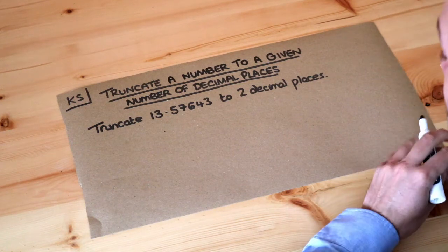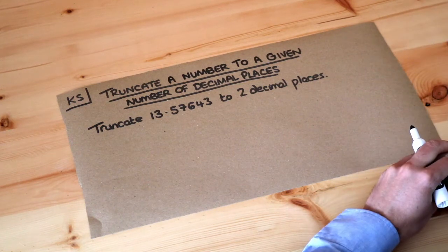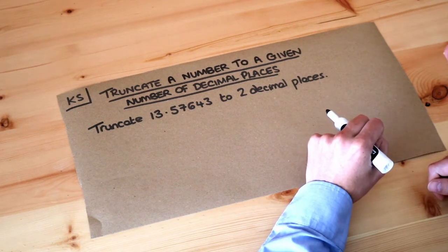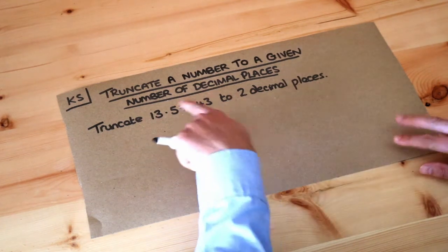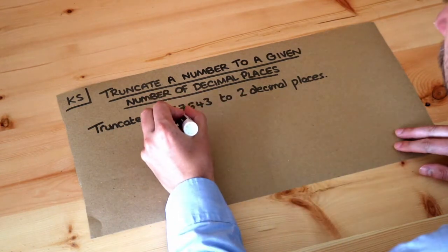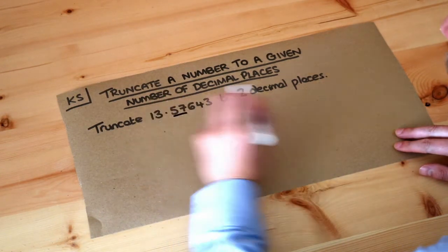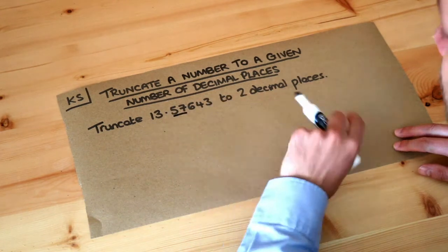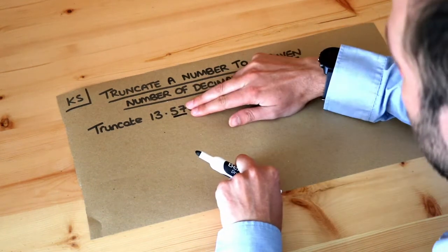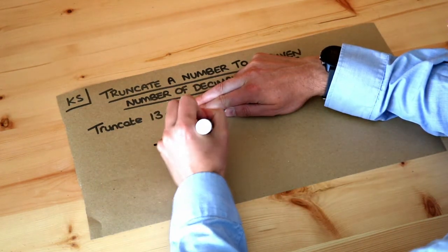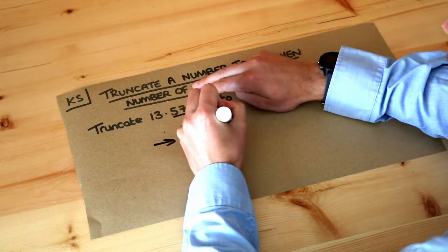We've already seen how to round a number to a given number of decimal places. Truncating in some ways is easier. If you want to truncate this number to two decimal places, we look at the first two digits after the decimal place, keep those, and just discard the rest. So we would actually get 13.57.